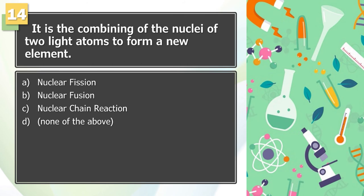Number 14: It is the combining of the nuclei of two light atoms to form a new element. A. Nuclear fission, B. Nuclear fusion, C. Nuclear chain reaction, D. None of the above.